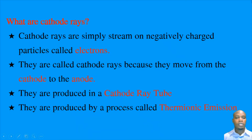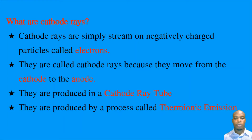What are cathode rays? Cathode rays are simply a stream of negatively charged particles called electrons. They are called cathode rays because they move from the cathode to the anode. They are produced in a discharge tube, also called a cathode ray tube.